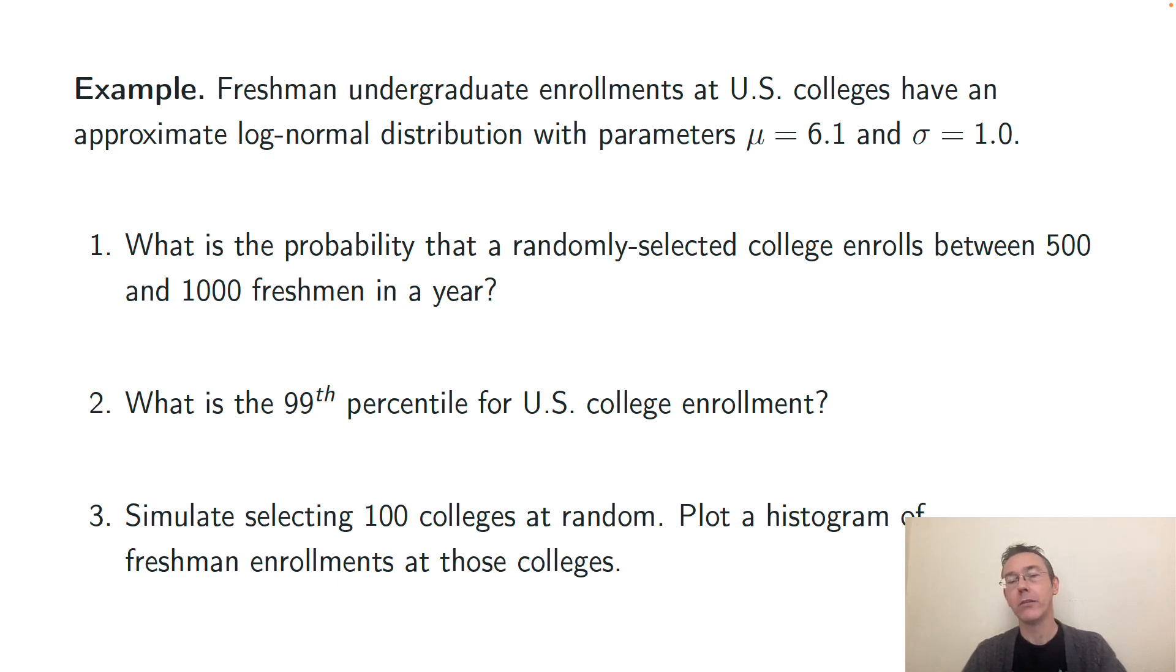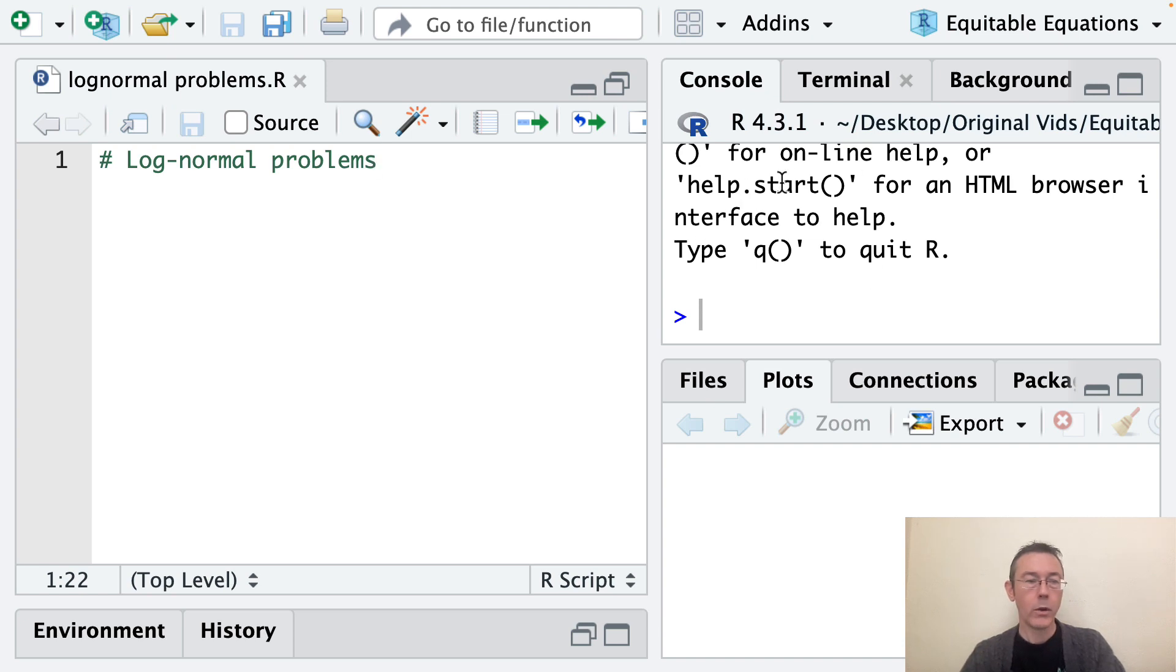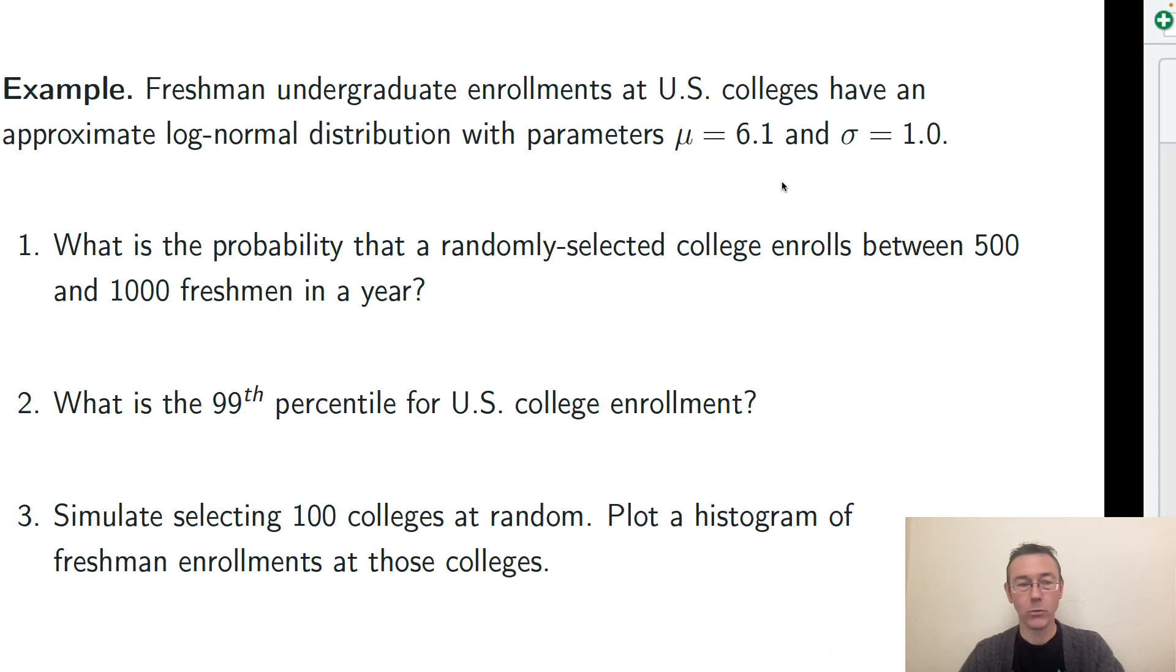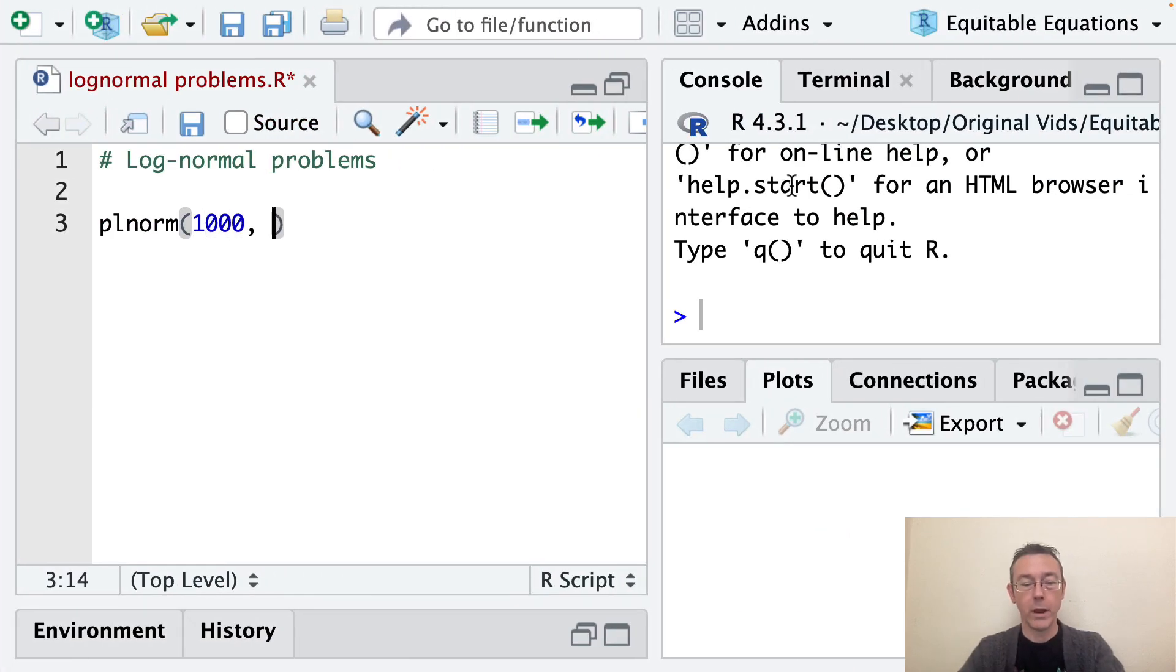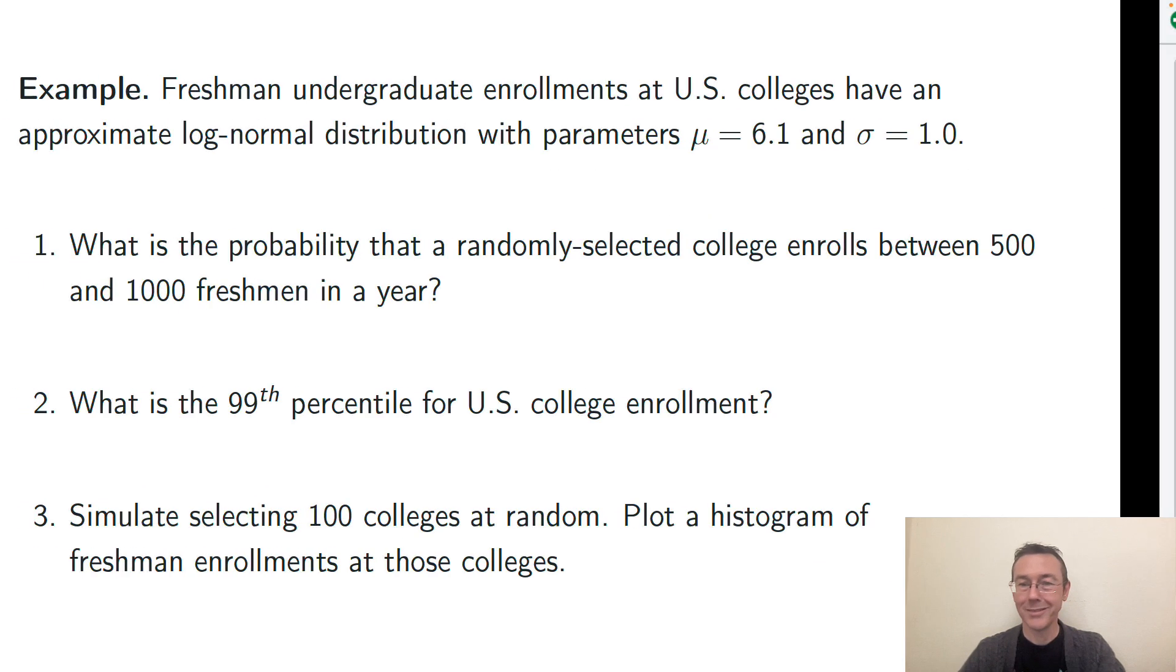Problem one: what's the probability that a randomly selected college enrolls between 500 and 1,000 freshmen per year? Here, I've got some parameters, and I want to get a probability back, so this is going to be a plnorm question. All right, let's swap over to R. So when I want to get the probability that a randomly selected value is in between two values, I need to take a difference between my CDFs. So it's going to be the plnorm of the bigger value, which in this case was 1,000, with the specified parameters 6.1 and 1.0.